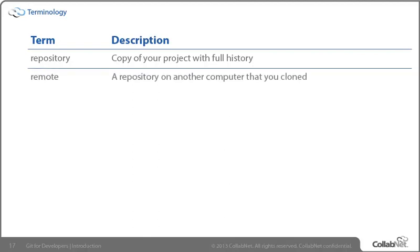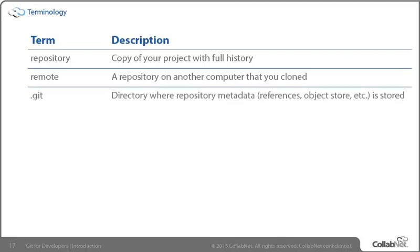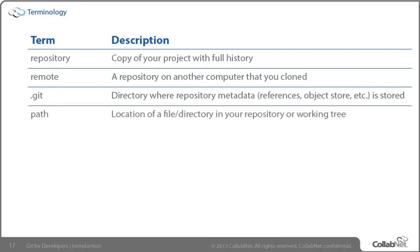That brings us to the term remote. For us as individual developers, most of the time we're working off of a clone — a copy of another repository — and most frequently we call the repository from which we copied the remote. The folder or directory in which you can find the repository when you download it on your machine is going to be under .git, and will include reference pointers, objects, and a lot of other things we'll look at in Essential Concepts 1. When we use the term path, that means the location of a file or directory — either in our repository or in our working tree.